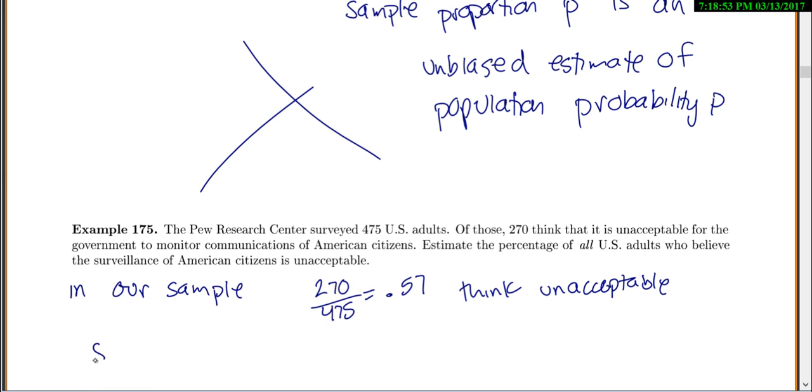So, we'll say 0.57 think it's unacceptable. I estimate 0.57 of all U.S. think it is unacceptable. So, for a very complicated lead-in, we're basically saying if our sample proportion or percentage is 0.57, then that's our best estimate for the entire U.S., or the entire population.